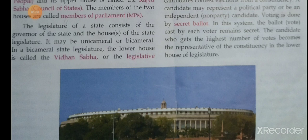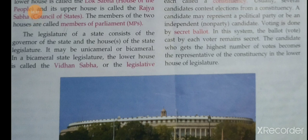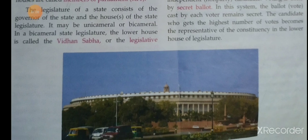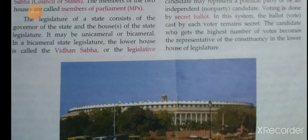The upper house is never dissolved — it is not officially broken up after a fixed time. One-third of its members retire every two years, and elections are held for those vacancies only. Each member serves a term of six years.